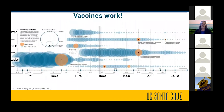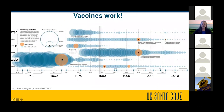Vaccines have had a huge impact on human health. What we see here is a timeline, and on it are several different diseases. In orange is when a vaccine was released. I want to highlight three — these three are respiratory viruses. You can see the dramatic decrease in the number of virus infections upon the licensing of a new vaccine.